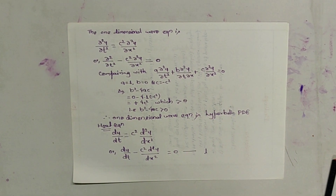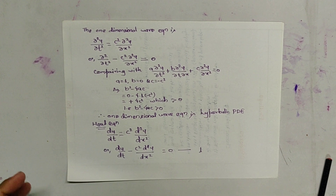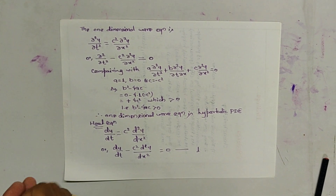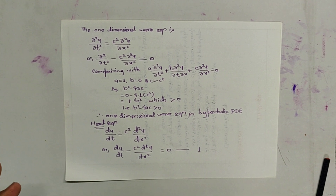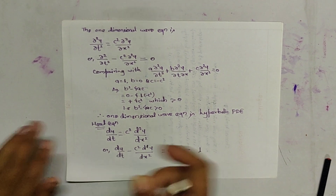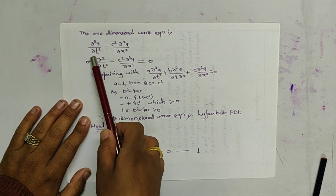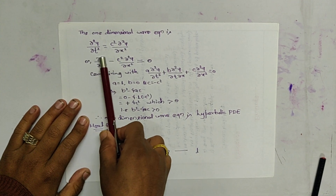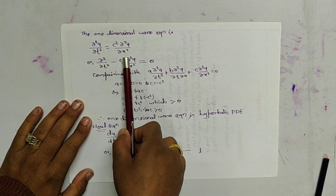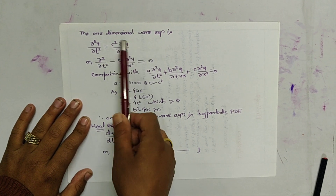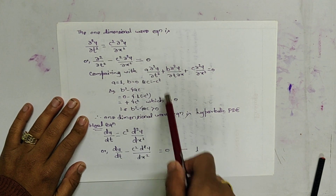Namaste. Today in this video we are going to discuss about partial differential equations used in the one-dimensional wave equation and heat equation. The one-dimensional wave equation is given as del²u/dt² = c² del²u/dx². Moving this part to the left-hand side, it becomes a standard form.